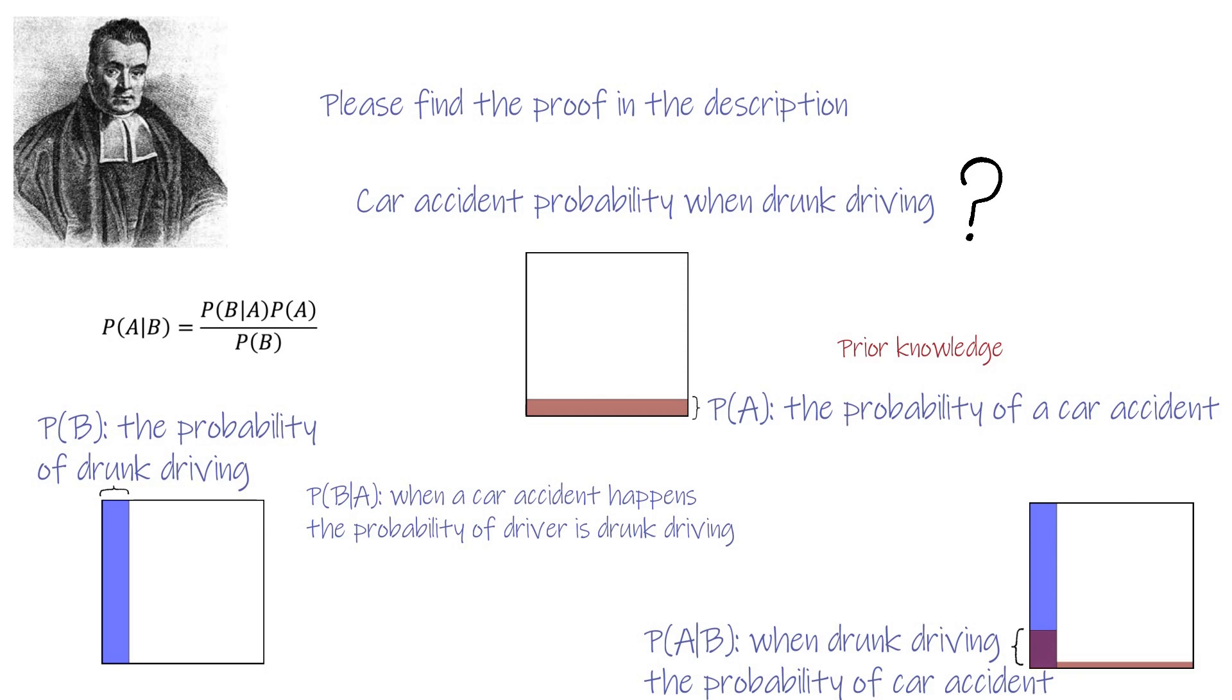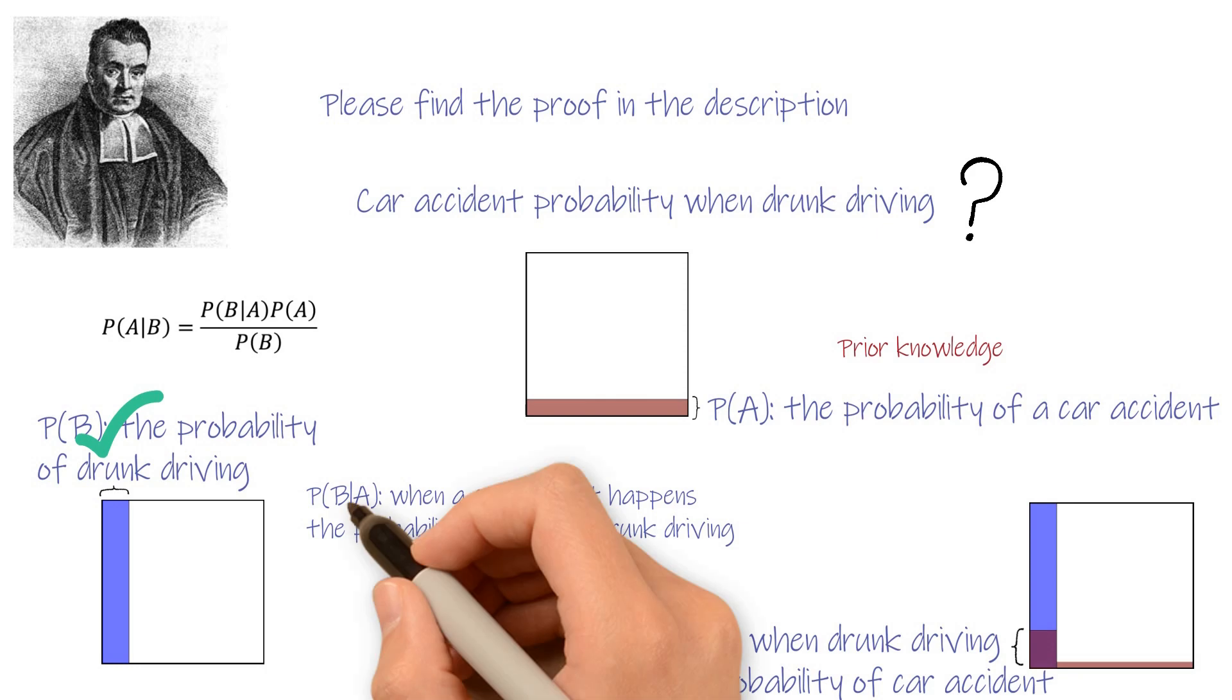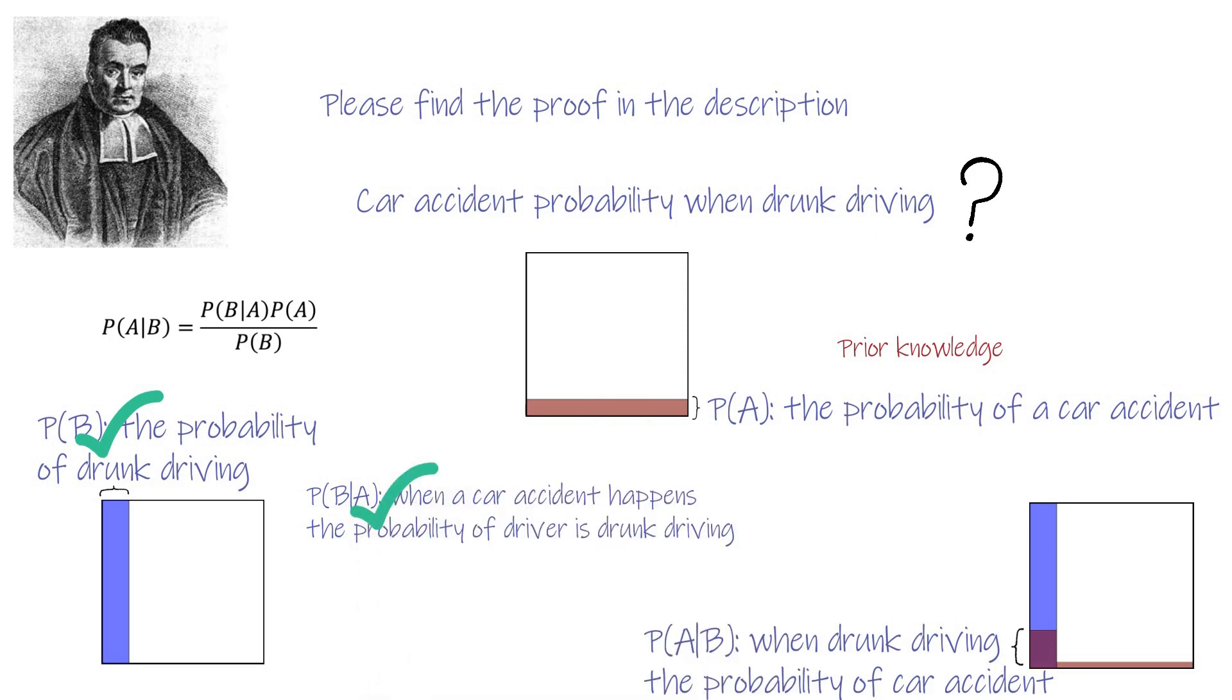Then, we must find a reliable value of probability of drunk driving P(B), and when car accident happens, the probability of driver is drunk. The historical data of these two values normally can be found from relevant government departments, in our case, the police.